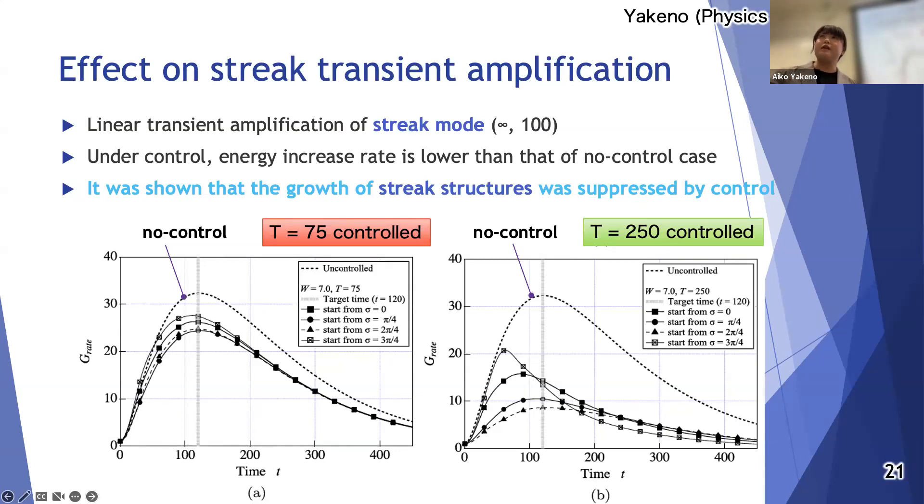First I confirmed the energy amplification becomes lower than that of no control case. It was shown that the growth of streak structure was suppressed by control even at T equal 75, optimal for this condition, and longer time period cases too. However, as you can see, the present linear analysis does not predict the optimal frequency. The optimal should be 75 case, but longer time period causes smaller streak amplification.